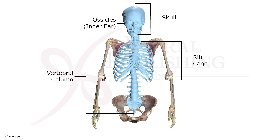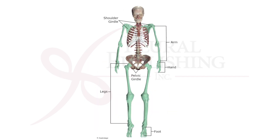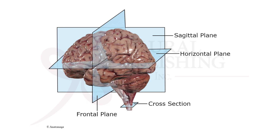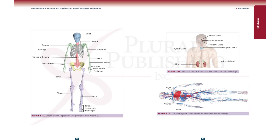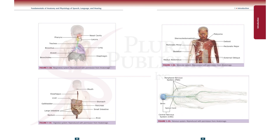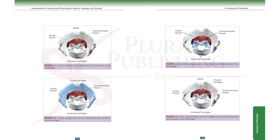We're also privileged in that the Anatomage Company allowed us to use their digital cadaver images for this book, one of which is this beautiful image here on the cover. That is important because the critical feature of learning anatomy is being able to view the structures that are being discussed. That is what makes the concepts concrete, not abstract, and therefore easier to comprehend and retain by the undergraduate student.